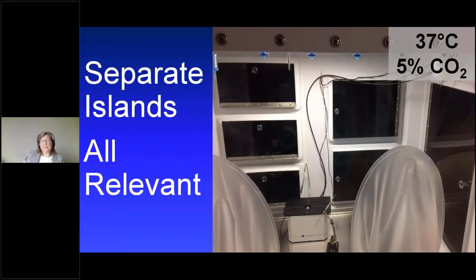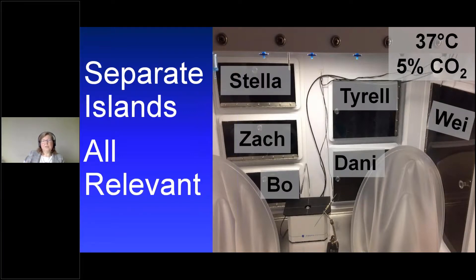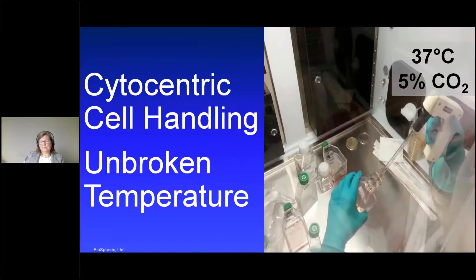With compartmentalization of the cell culture environment in the ex vivo system, you can have multiple parallel environments — separate islands with separate relevant conditions for your model. In my lab I set up an ex vivo with six different oxygen levels simultaneously to do range-finding experiments. Cells never have to suffer variable conditions because I can set the cell processing chamber to match any one of these incubators before I open the door — the cells never know they're out of the incubator. In your lab you could also use this to separate users, so nobody interrupts anyone else's experiments by opening a door and creating variable conditions. Separate islands, all relevant.